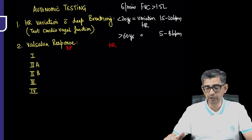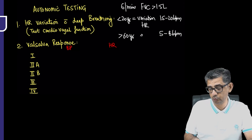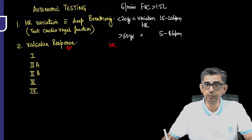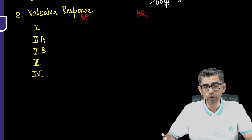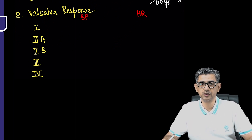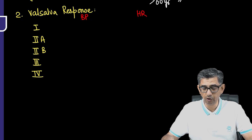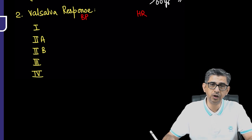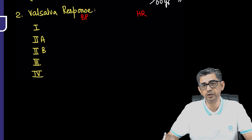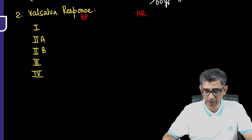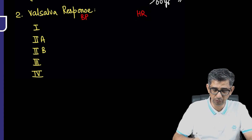Next we'll look at the Valsalva response and Valsalva ratio. Let's look at the four phases of the Valsalva response and check what happens to blood pressure and heart rate in each phase. You don't need to remember the heart rate values because whatever direction the blood pressure arrow goes, the heart rate will always be opposite — for example, if BP is increasing, baroreceptor drive kicks in and decreases heart rate. The only exception to this will be in a later phase.